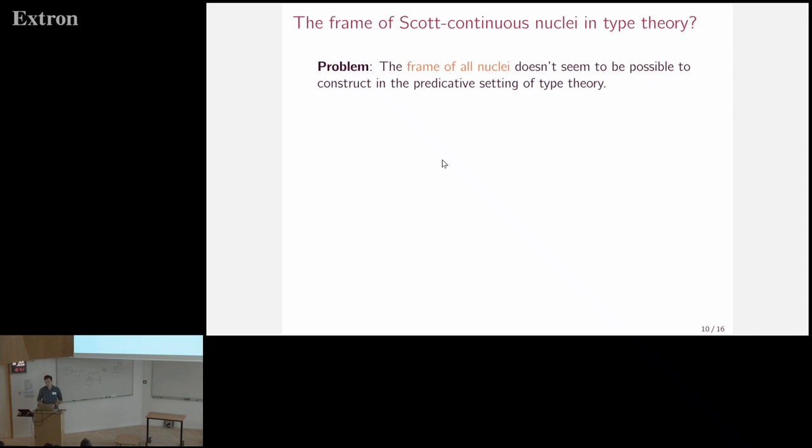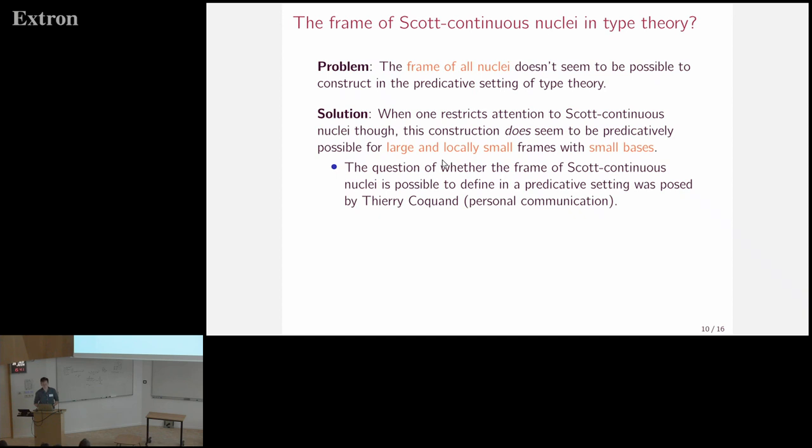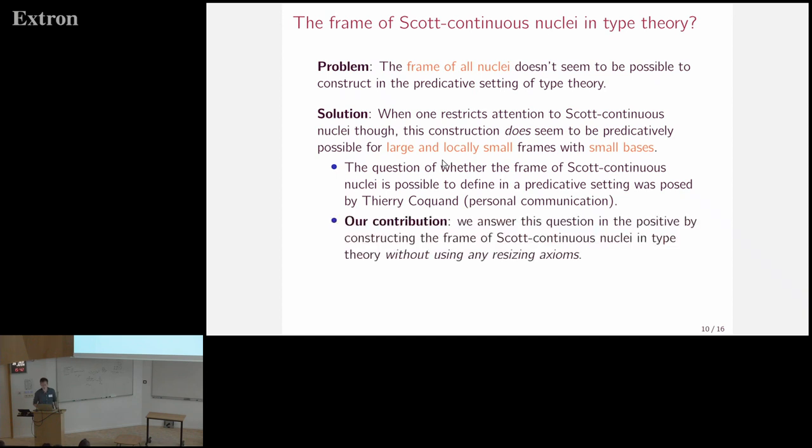So when we try to do this in type theory, we run into the problem that the frame of all nuclei doesn't seem to be possible to define in a predicative context. So what do we do about this? We construct the subframe consisting of the Scott continuous nuclei directly, and we restrict attention to large and locally small frames with small bases. And the question of whether this construction would be possible in this special case was asked by Terry Coquand, and our contribution is that we answer this question in the positive by constructing the frame of Scott continuous nuclei. And this question turns out to be non-trivial, so a lot of definitions need to be reformulated, and I will talk a bit about this.